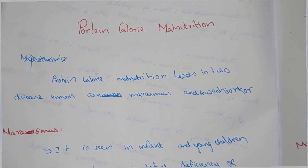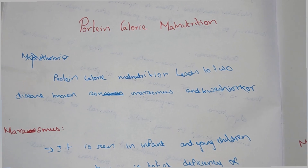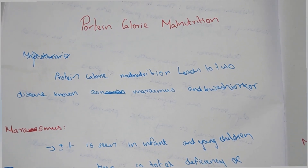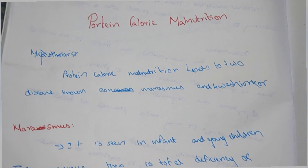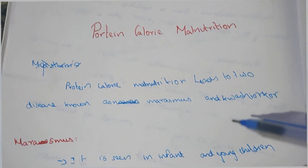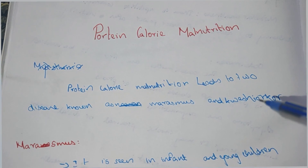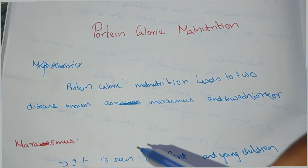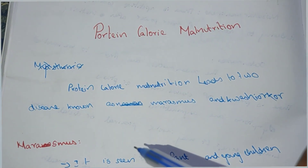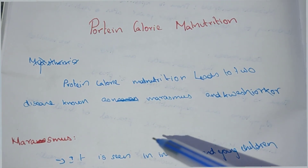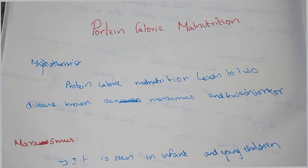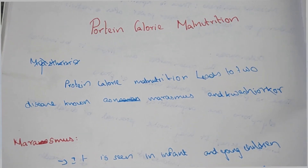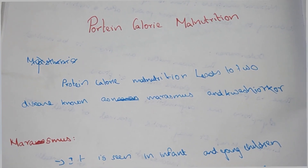Hi everyone, welcome to Medicine Out YouTube channel. In this video we are going to see about protein calorie malnutrition. Protein calorie malnutrition leads to two diseases known as marasmus and kwashiorkor.